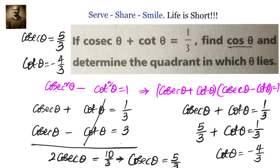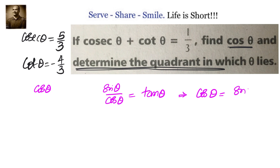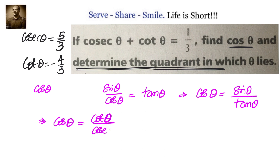Now we need to find cos theta from cosecant theta and cot theta. We know that sin theta by cos theta equals tan theta, so cos theta equals sin theta by tan theta, which can also be written as cot theta by cosecant theta. Since cot theta is minus 4 by 3 and cosecant theta is 5 by 3, cos theta equals minus 4 by 5.